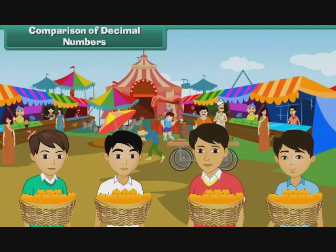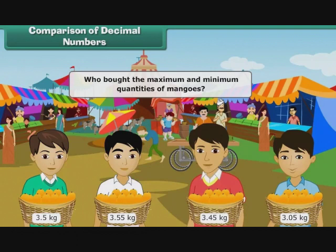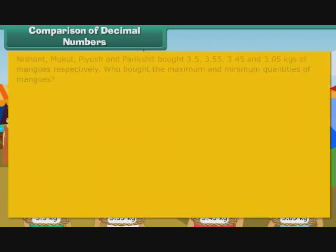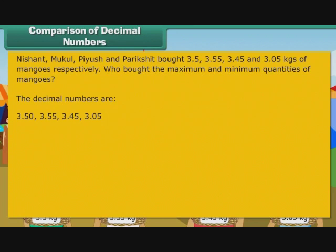Nishant, Mukul, Piyush and Parikshit bought 3.5, 3.55, 3.45 and 3.05 kgs of mangoes respectively. Who bought the maximum and minimum quantities of mangoes? Let us first arrange the decimal quantities in the descending order, that is the decreasing order of values. The decimal numbers are 3.5, 3.55, 3.45, 3.05. Let us rewrite the numbers so that all of them have the same number of digits after the decimal point. So we have 3.50, 3.55, 3.45, 3.05.